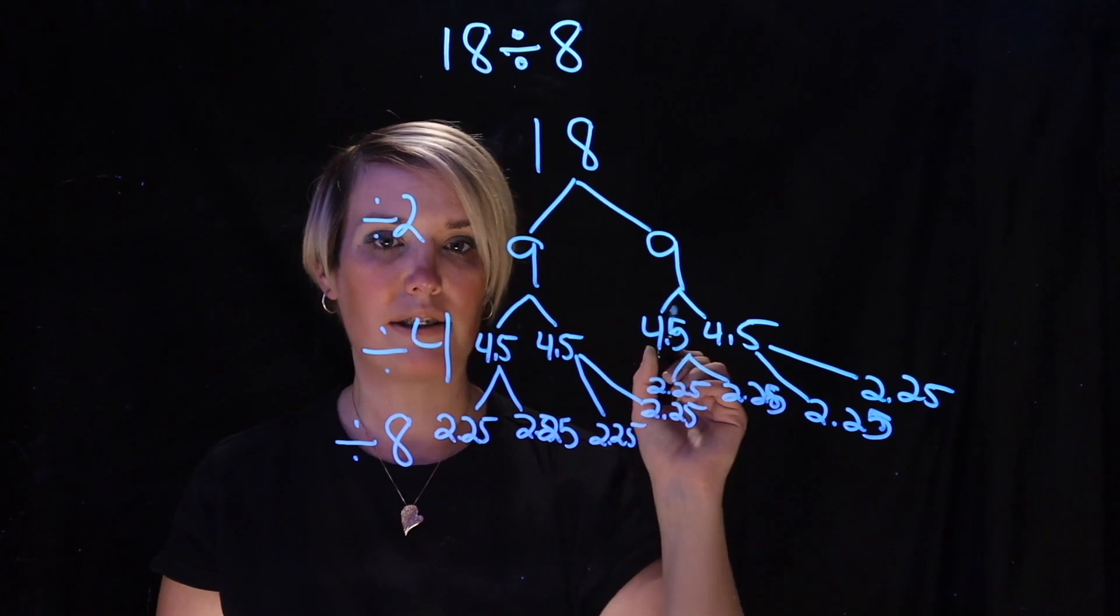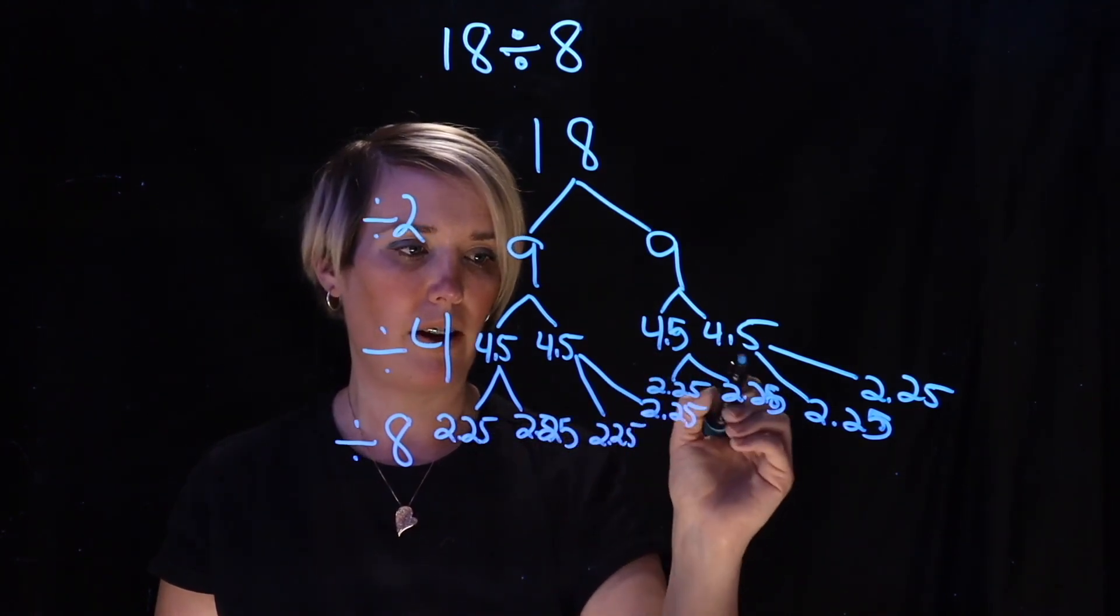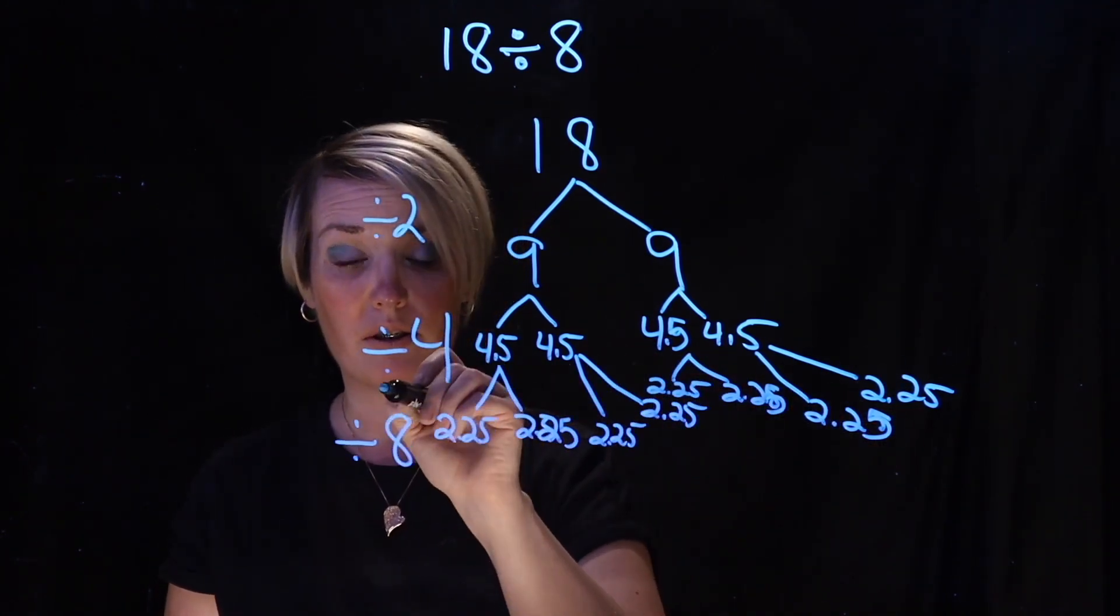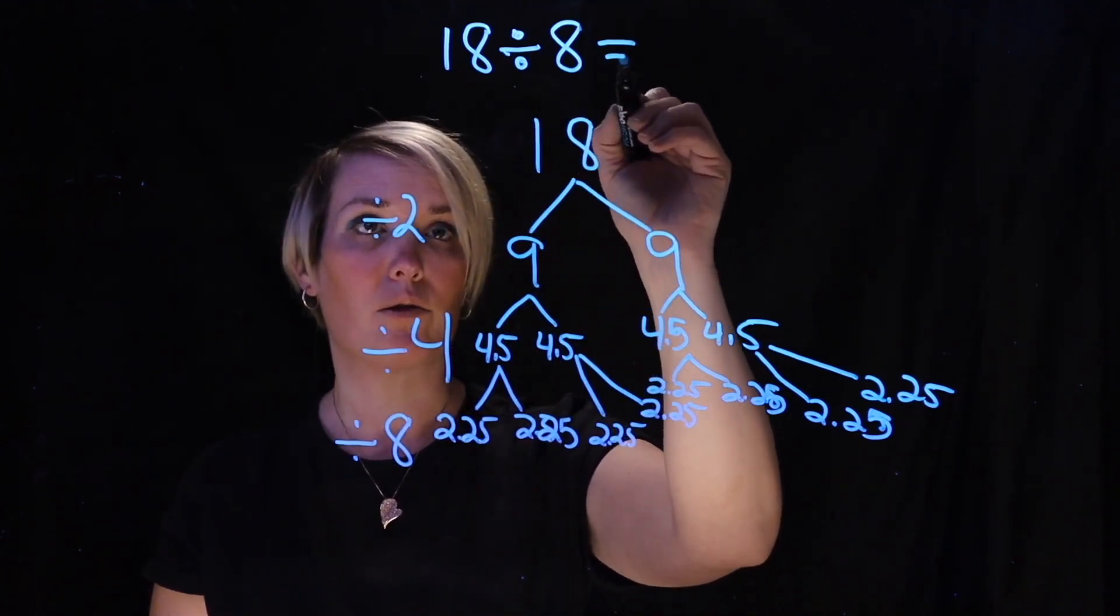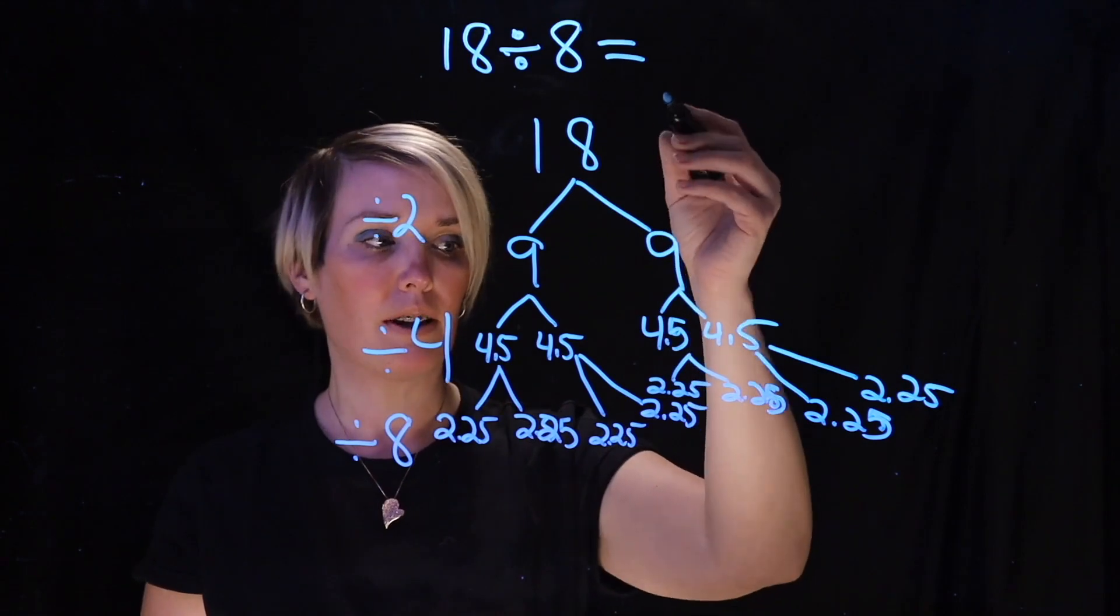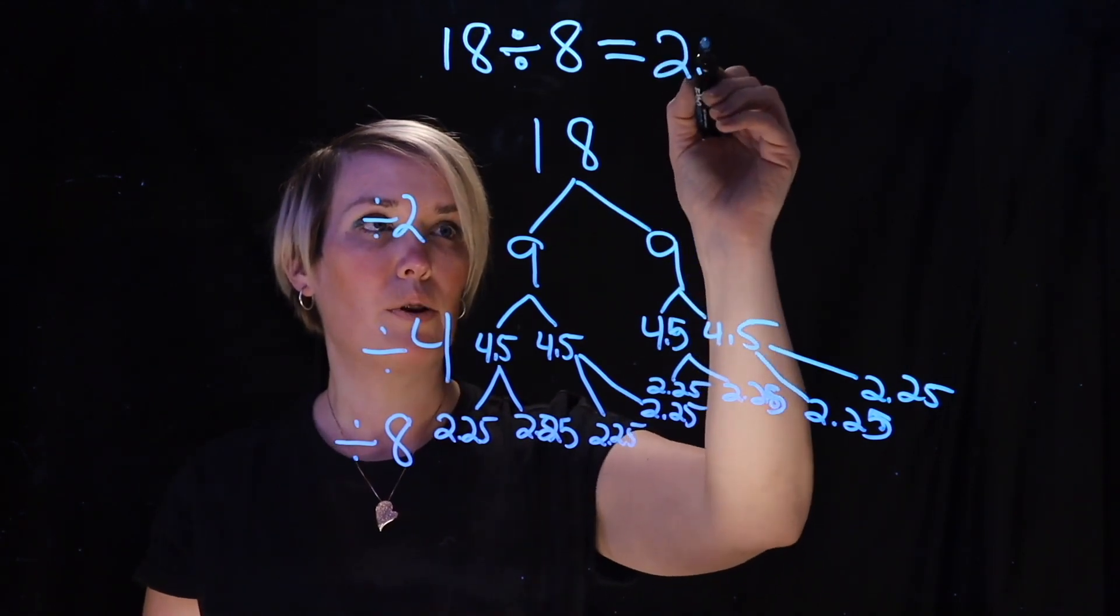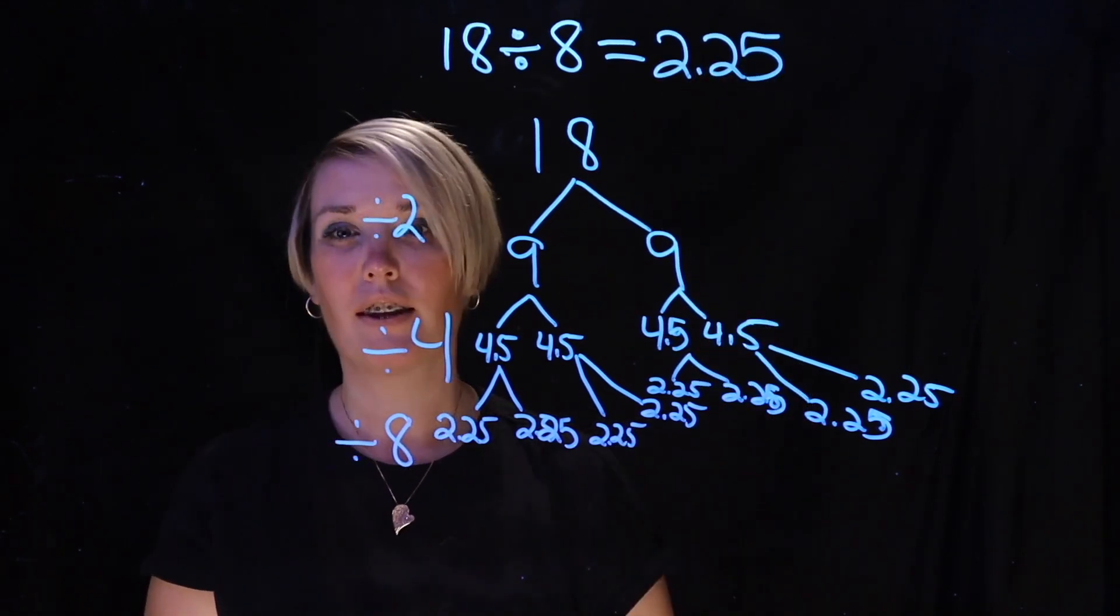So she has 8 equal groups. 1, 2, 3, 4, 5, 6, 7, 8. So she's divided by 8. So 18 divided by 8 or 18 into 8 equal groups is 2.25. Great idea.